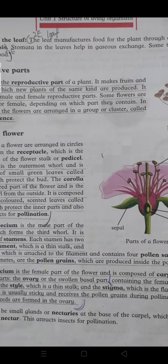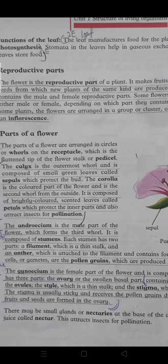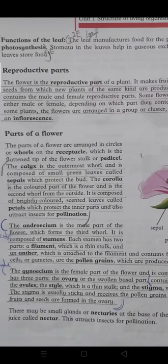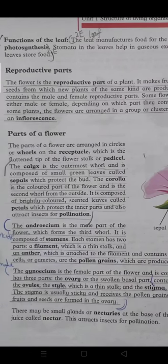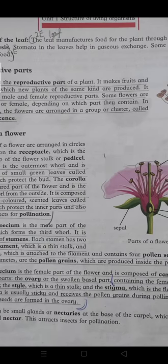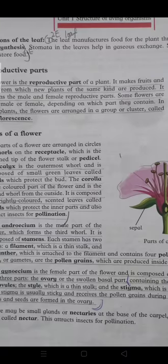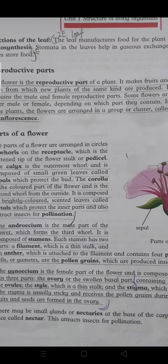This is the part through which the species continues; new organisms are formed while old ones die. The flower contains the male and female reproductive parts. Some flowers are either male or female depending on which part they contain. In some plants, the flowers are arranged in a group or cluster called an inflorescence.